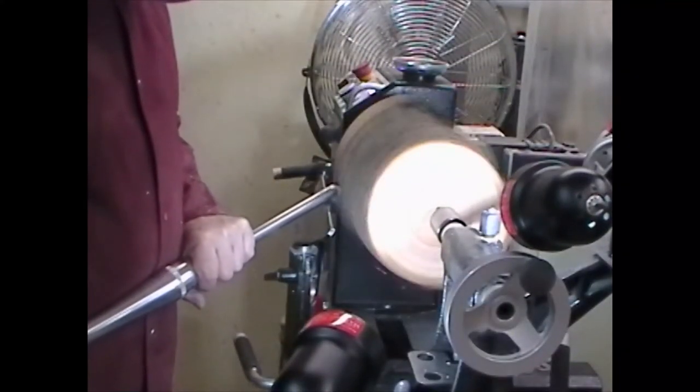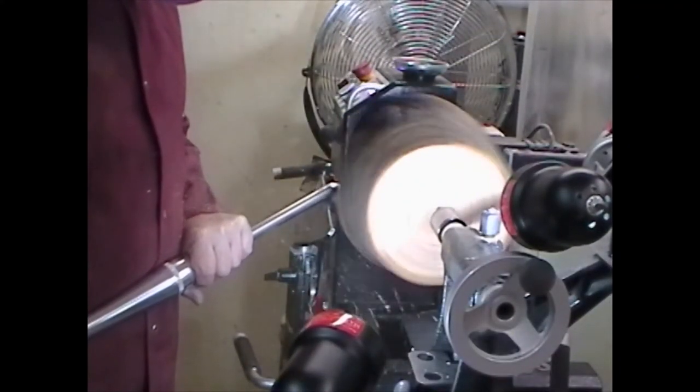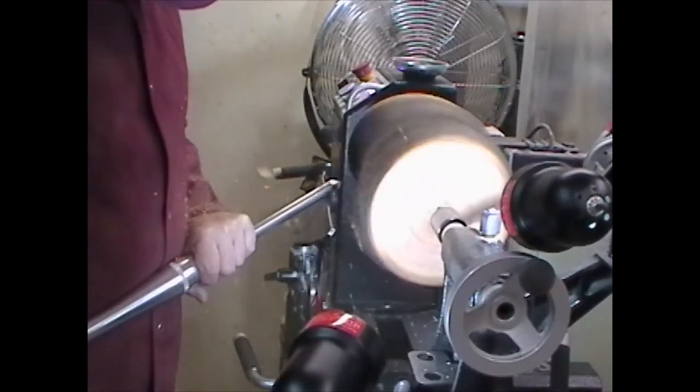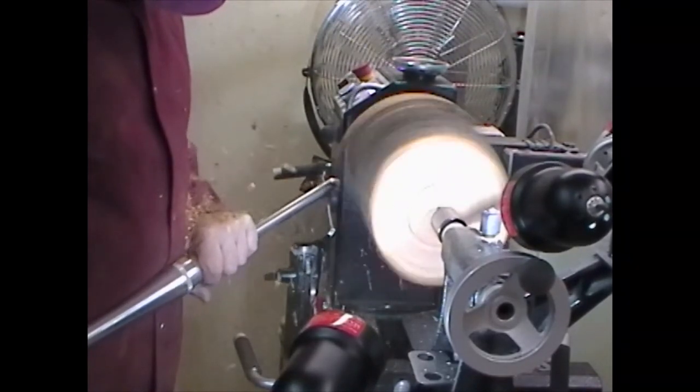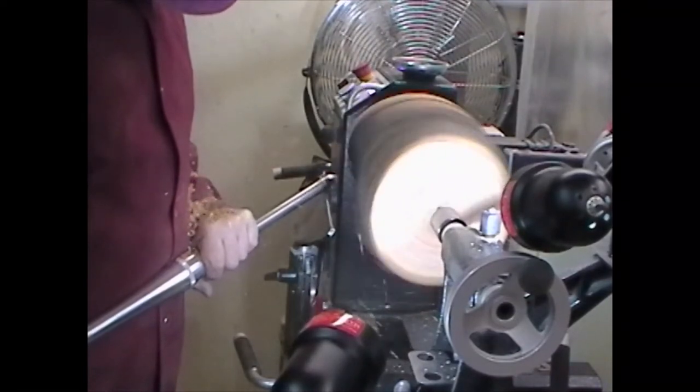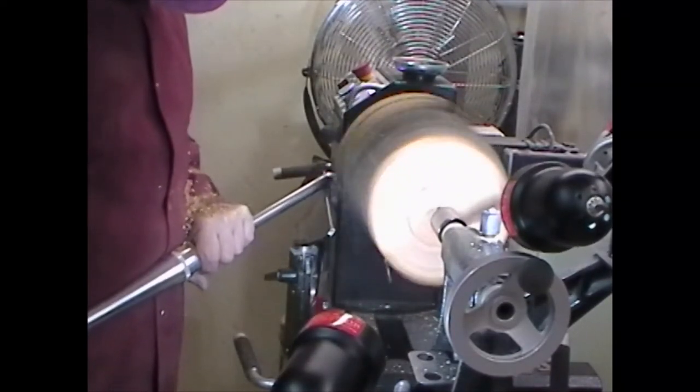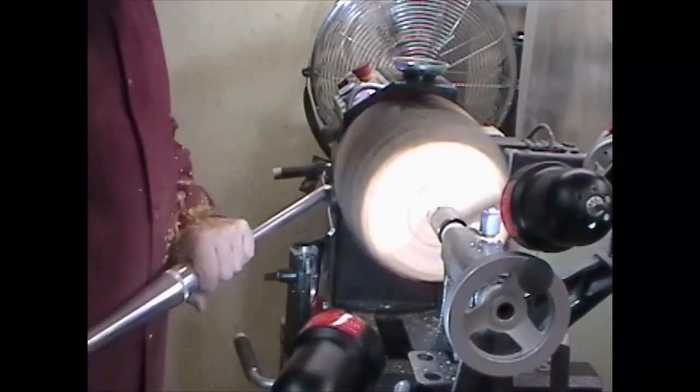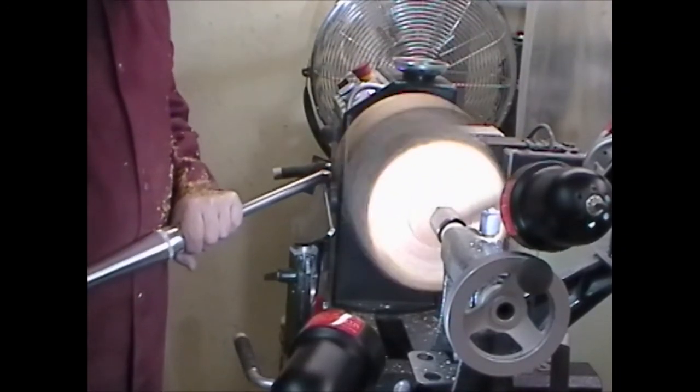Before I can start doing any pyrography I have to create the outer shape of my bowl. I begin by slowly removing the bark starting at one end and working my way back. The bark is well attached. The tree was cut down in late fall so the cambium wasn't actively growing and there was very little moisture in the wood.